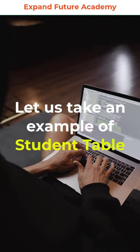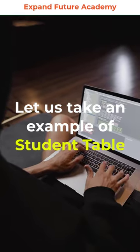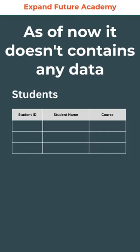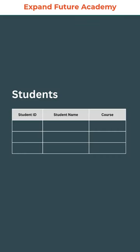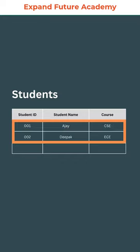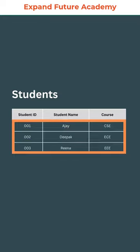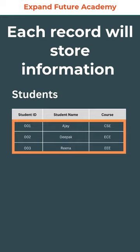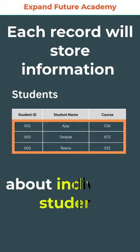Let us take an example of the student table. As of now, it does not contain any data. If I insert data into the student table, this will be called as a record. A table can contain any number of records, and each record will store information about individual students.